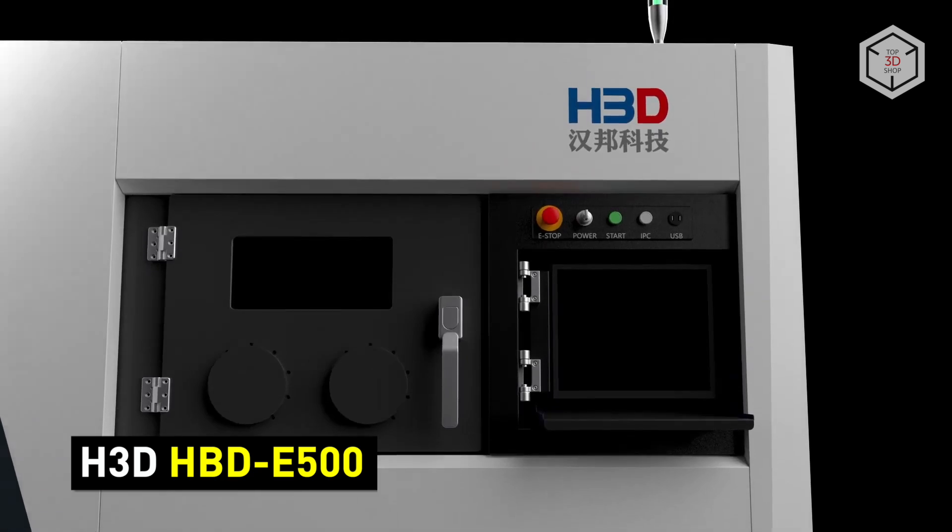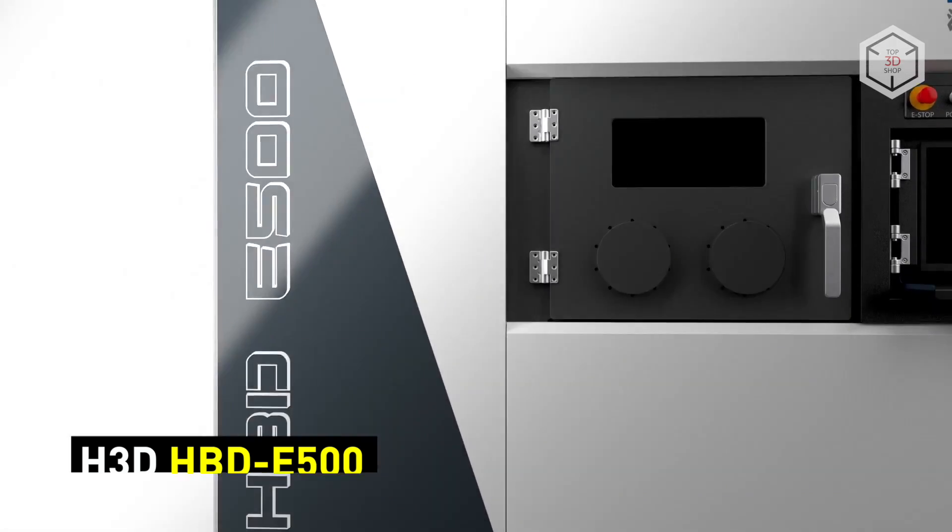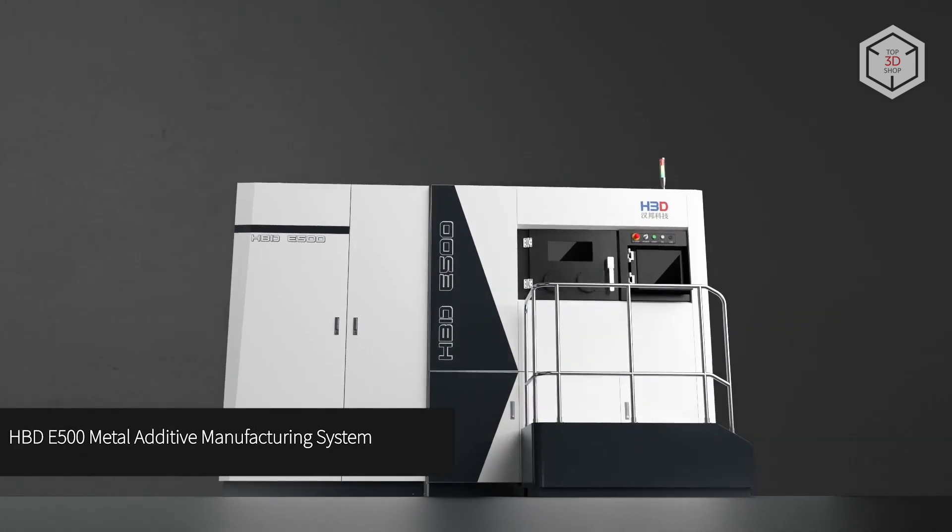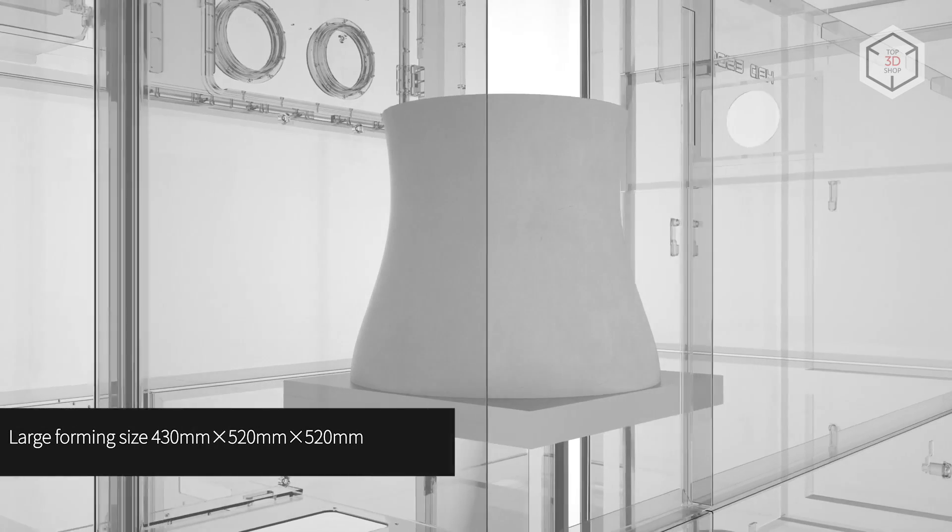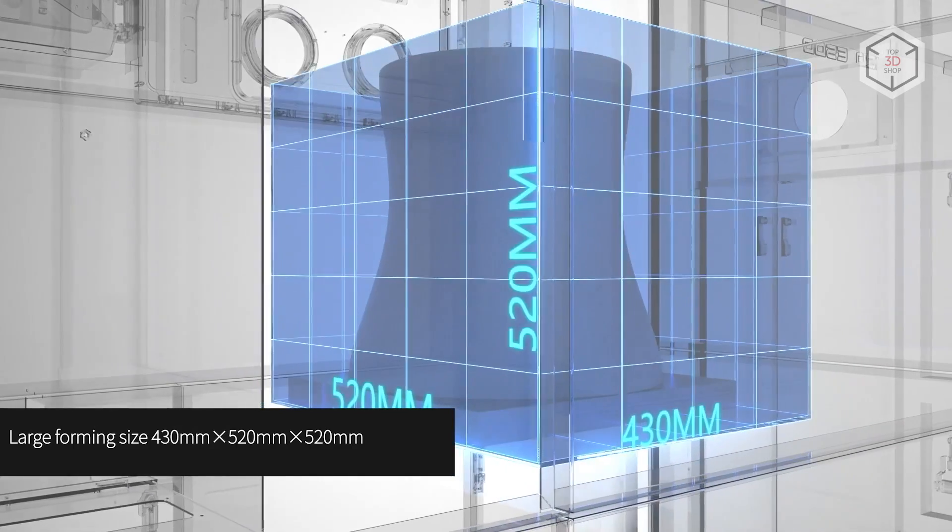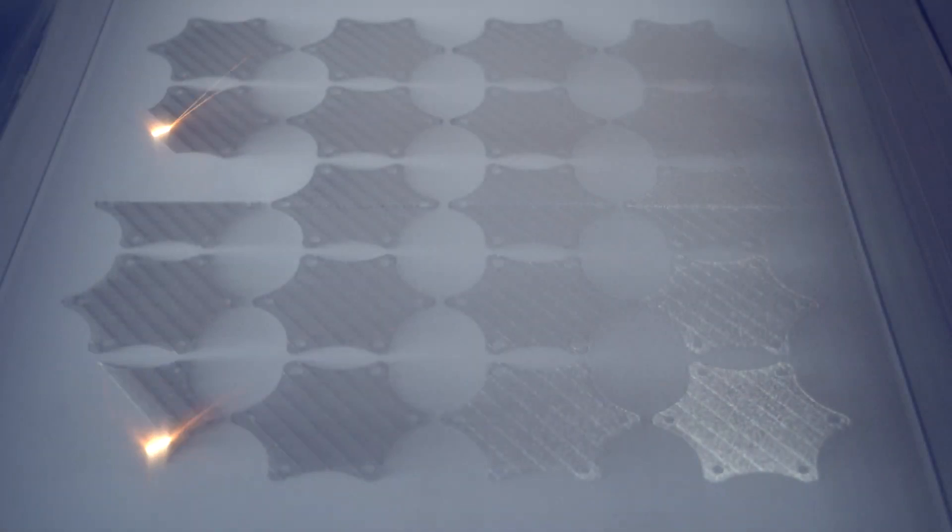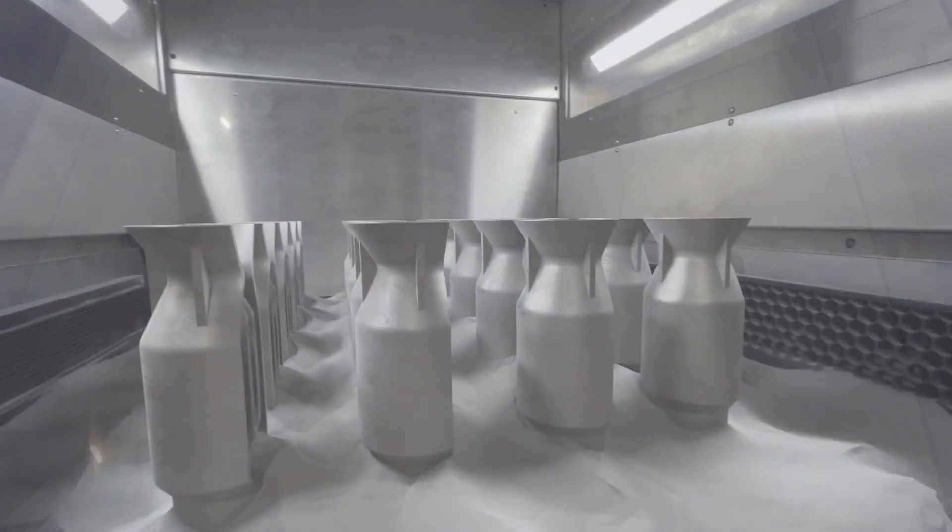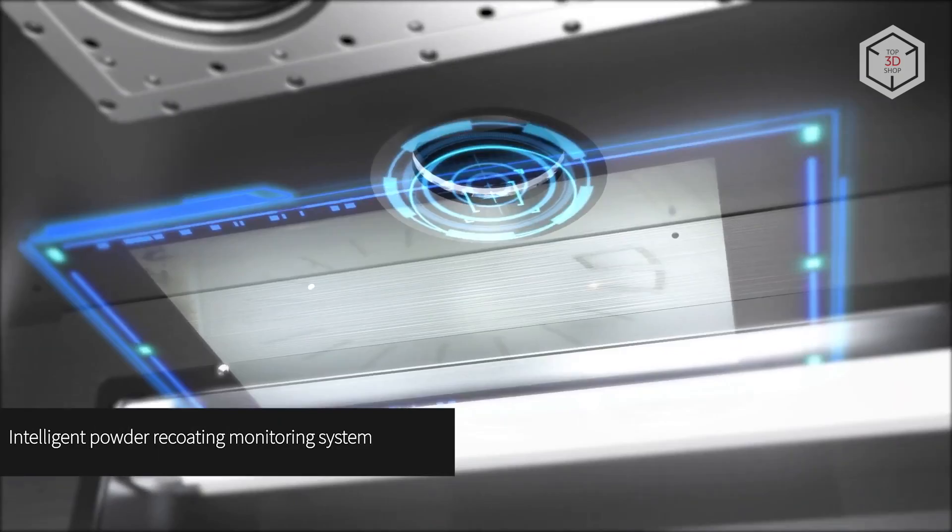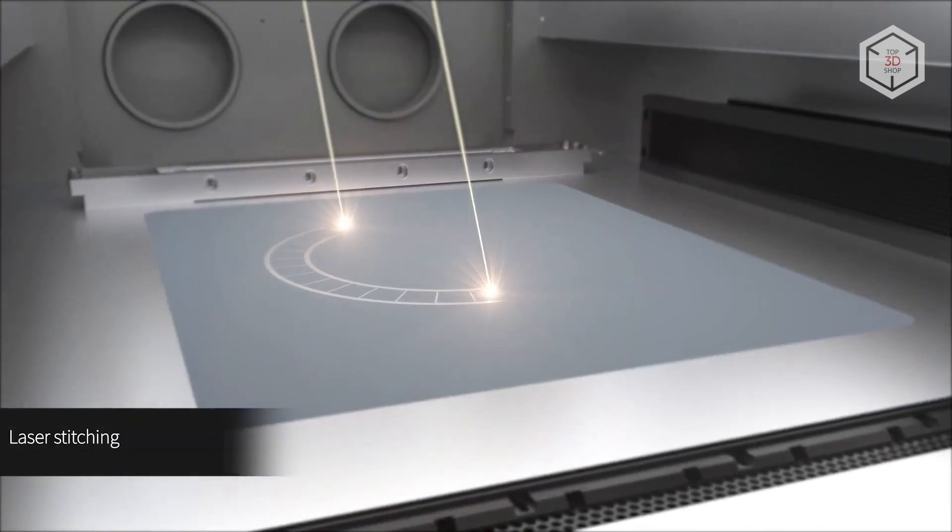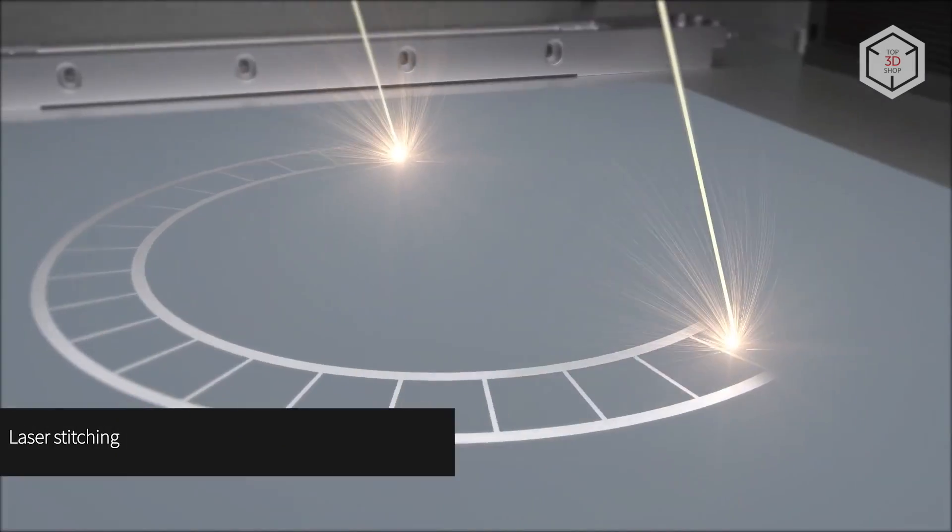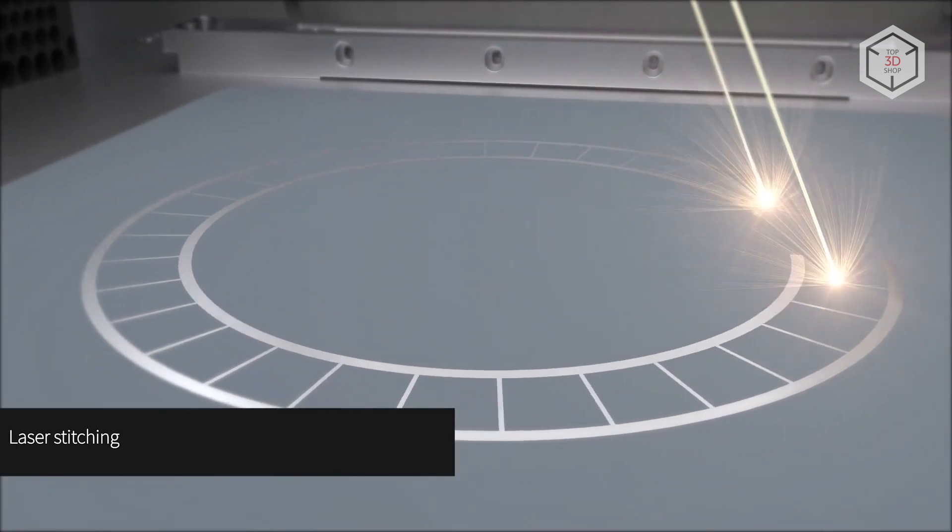The HBD E500 from H3D is recommended for aerospace, automotive, and medical applications. With a build area of 430 x 520 x 520 mm, this industrial 3D printer can be used for the production of large-scale prototypes, as well as high-volume manufacturing of parts from various metals and alloys, the minimum layer height being 30 microns. Depending on the modification, the HBD E500 can be equipped with two or three 500-watt lasers.